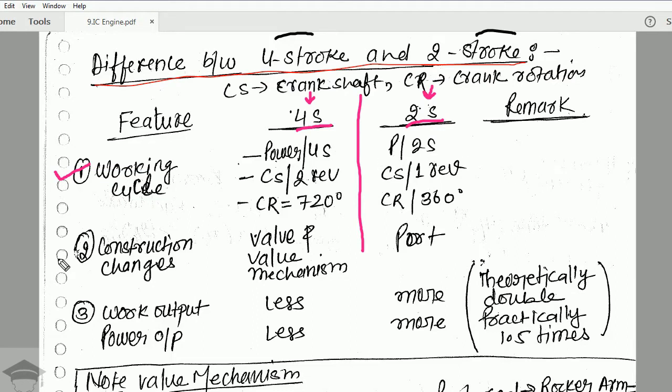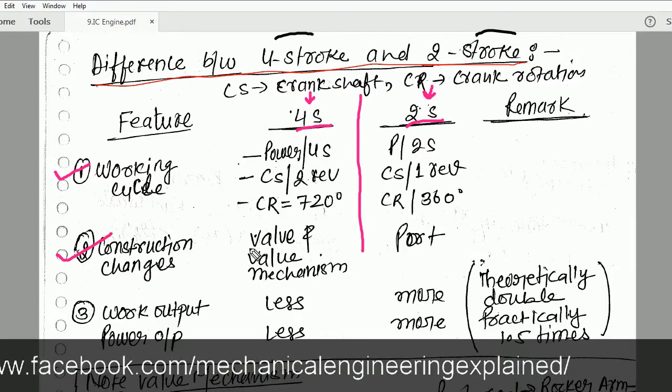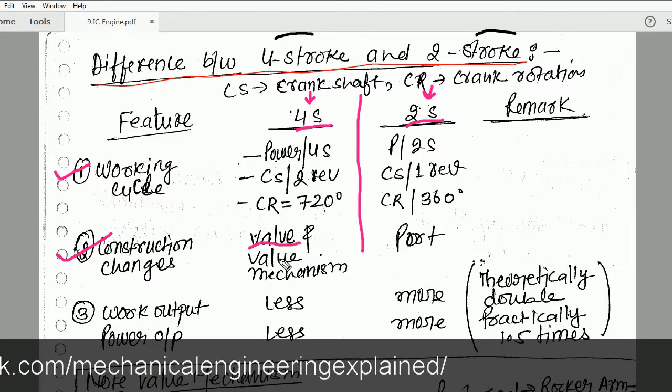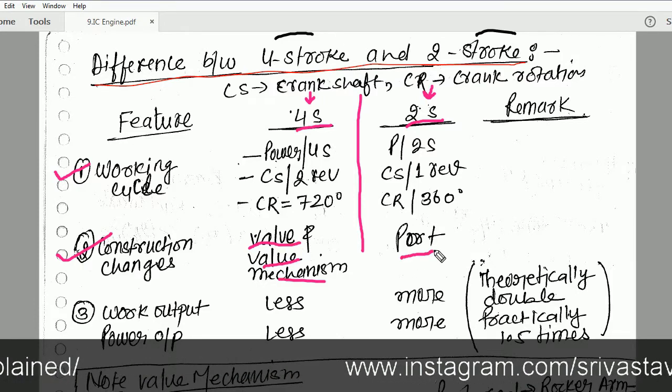The second difference is the construction. In a four stroke engine, valves are used, whereas in a two stroke engine, ports are used.